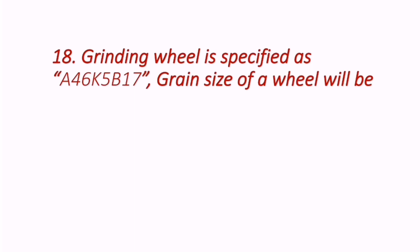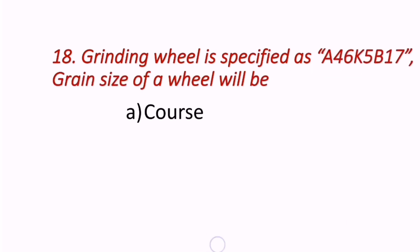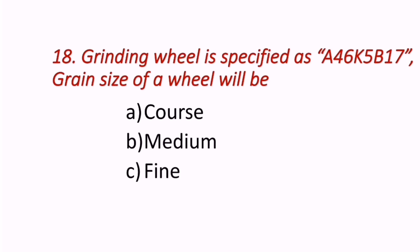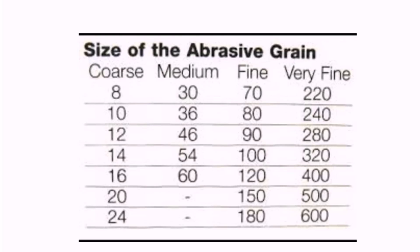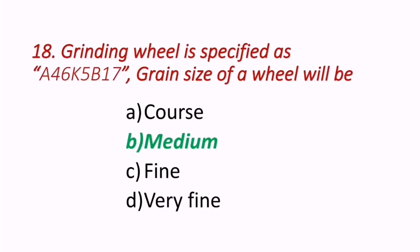Eighteenth question: A grinding wheel is specified as A46K5B17. What is the grain size of this wheel — coarse, medium, fine, or very fine? Coarse is 8–24, medium is 30–60, fine is 70–180, and very fine is 220–600. Since 46 falls within 30–60, the grain size is medium. B is the correct answer.